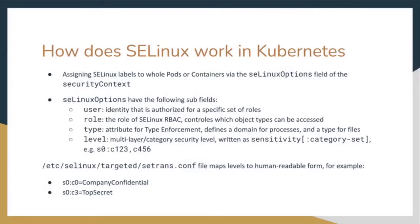How does SELinux work in Kubernetes? Assigning SELinux labels to whole pods or single containers can be done by using the SELinux options field of the security context. Processes as well as files are labeled with an SELinux context containing additional information: the SELinux user, its role, its type, and optionally a level. Those are reflected in the SELinux options field. The user is an identity authorized to specify a set of roles, and roles work similarly to the Kubernetes RBAC system, controlling which objects can be accessed.